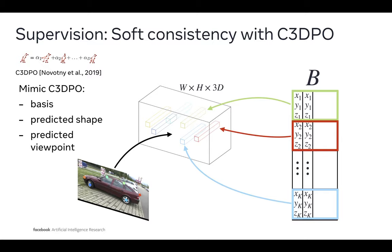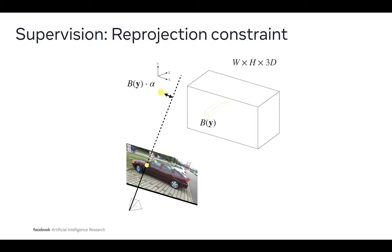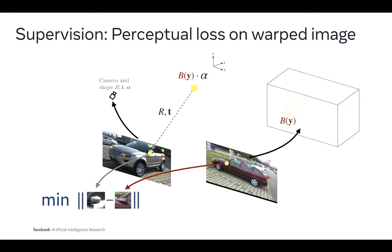See our research paper for more details. Next, we supervise the predicted 3D points for each pixel to re-project back to that pixel using the predicted camera parameters. Similarly, we enforce photometric consistency on pairs of images. We combine predicted blend shapes from one image with predicted camera and shape from another image to define warping between them, and minimize perceptual loss.